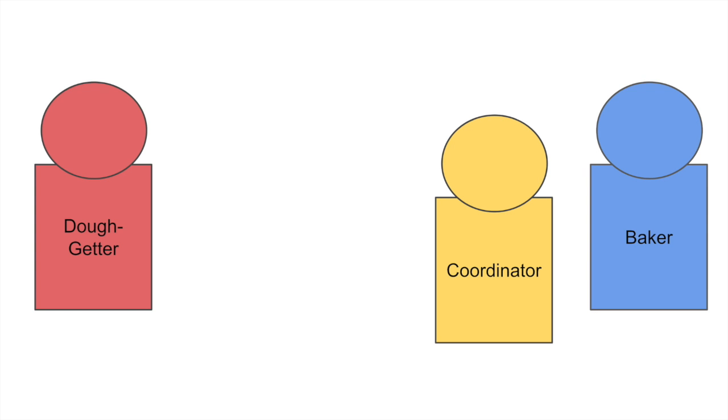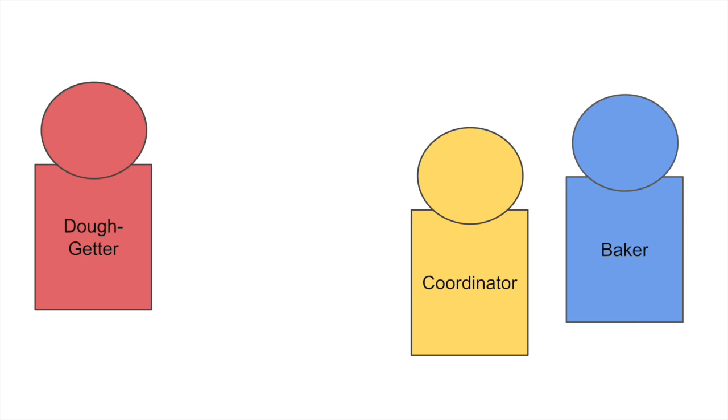Today we're going to discuss synchronous versus callbacks. In this scenario, we have the dough getter, the coordinator, and the baker. You can think of them as functions, but that's not so important here.